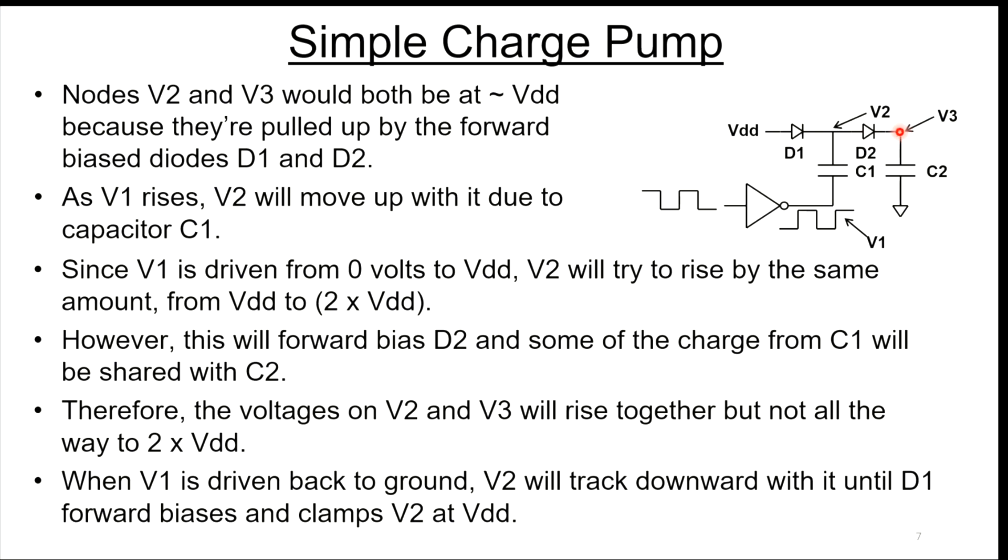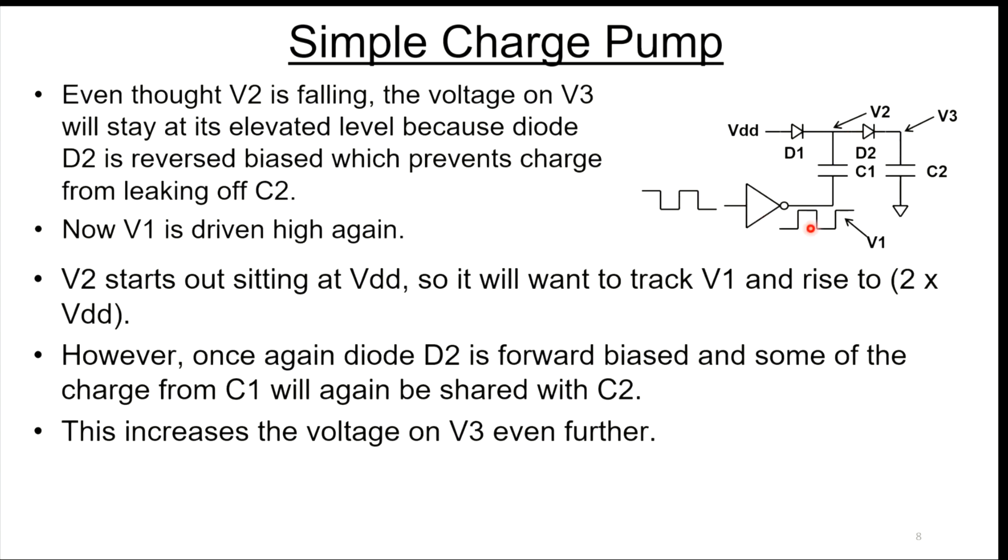Any charge you pumped onto cap C2 is going to stay there because it can't leak back off. So even though V2 is falling, the voltage on V3 stays elevated. Diode D2 is reverse biased.